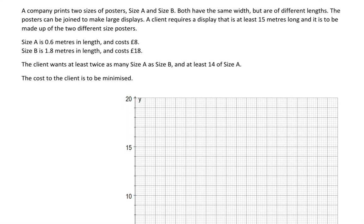A client requires a display that is at least 15 meters long and it is to be made up of the two different size posters. Size A is 0.6 meters in length and costs eight pounds. Size B is 1.8 meters in length and costs 18 pounds.